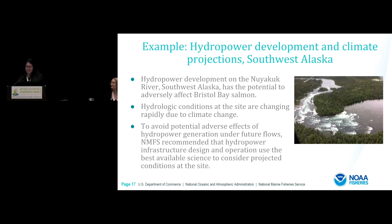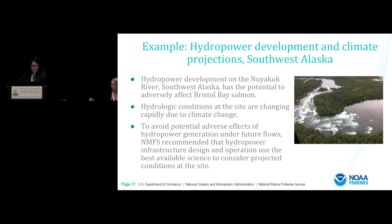Another example is the Newyukuk River hydropower project. The initial design failed to consider projections of increased precipitation, which would affect both power production and the riverine environment. NMFS recommended that the project design consider climate change and projected future flows to avoid adverse effects to the Bristol Bay salmon and other trust resources.